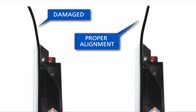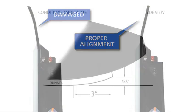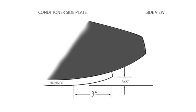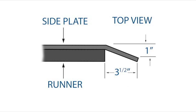The runner should be straight with the exception of the front few inches. This illustration shows that in the case of the runner, the front three inches should be raised approximately five-eighths of an inch. The front three and a half inches of the side plate should be bent inward one inch as shown in this diagram of the top view.